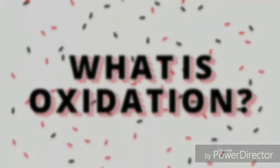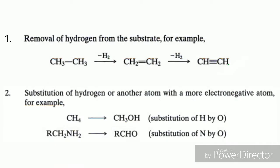So first, what is oxidation? Oxidation is the removal of hydrogen — as you can see, ethane to ethylene and further acetylene is produced by oxidation. One modern definition is that oxidation is the substitution of hydrogen or any other atom by a more electronegative atom. This is the modern definition of oxidation, as you can see in the reaction.